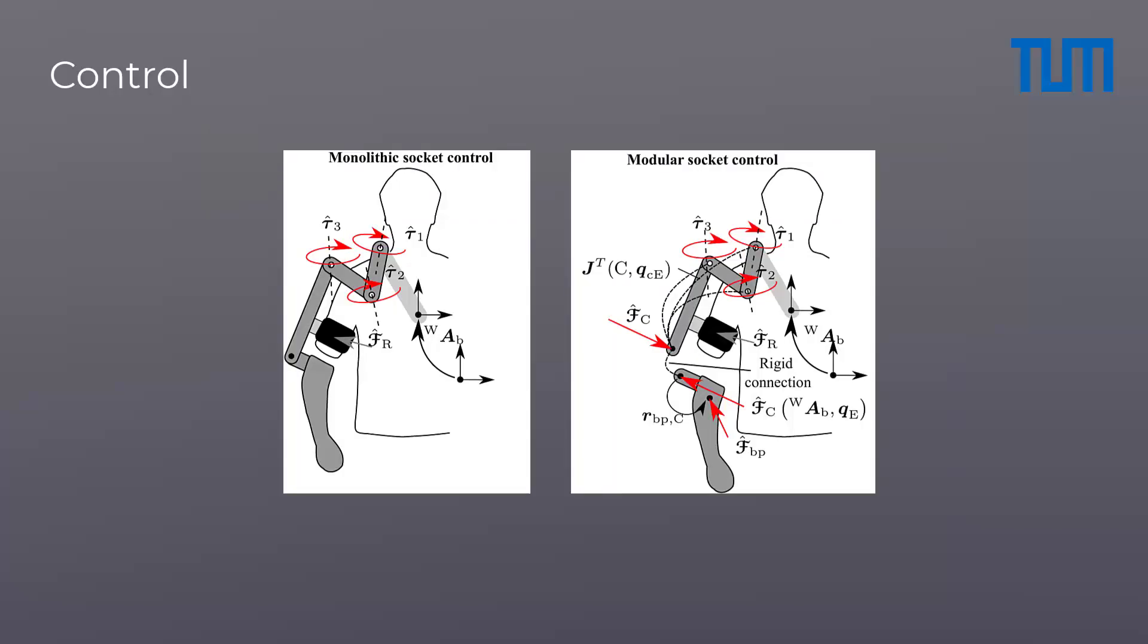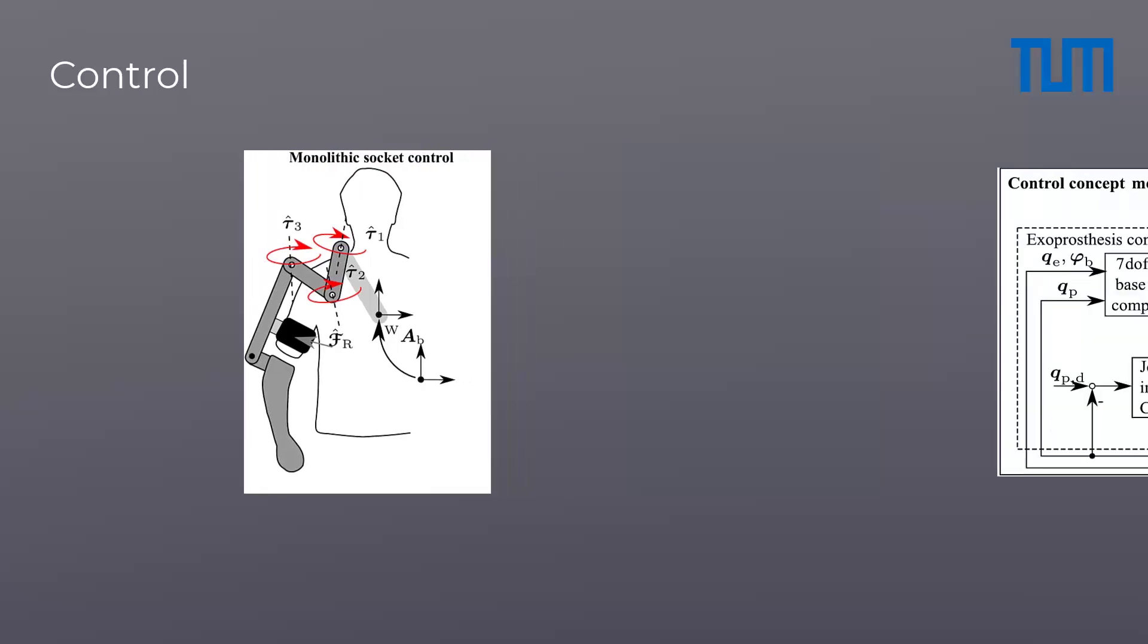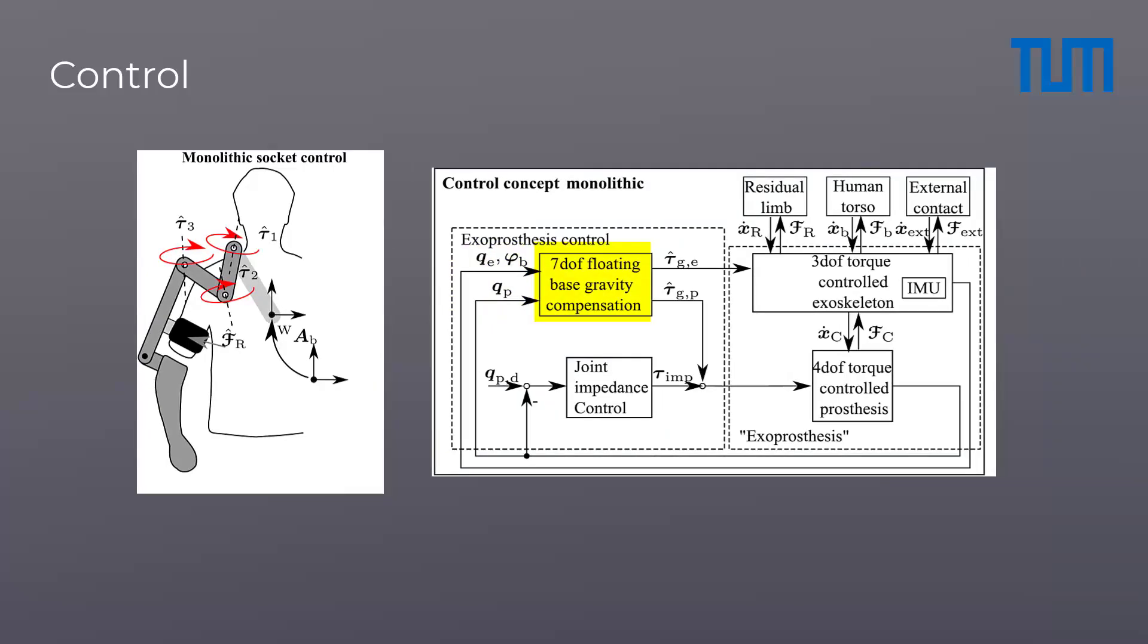Control. For our exoskeleton we propose two types of controllers: the monolithic and the modular socket controller. The monolithic controller considers the whole system as seven-DOF floating base serial kinematics.